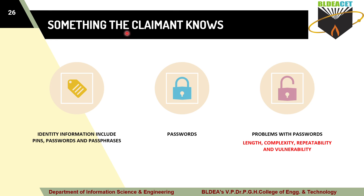Next is something that the claimant knows — identity information. To prove identification or claim authentication, this may include PINs, passwords, or passphrases. Starting with passwords: if you go to any online communication — any website or app — you must first enter your password. With the help of the password, communication is possible, and that password proves that you are the genuine user with the authority to use that particular website or app as a resource.